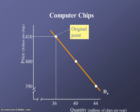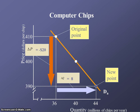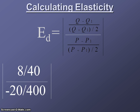Here's an example using a portion of the demand curve for computer chips. At the original price of $410, 36 million chips per year can be sold. If the price drops to $390, 44 million chips per year will be sold. We plug in the difference in quantities over the average quantity in the numerator, and the difference in prices over the average price in the denominator. Our answer is negative 4, but dropping the negative sign, our final answer is 4.